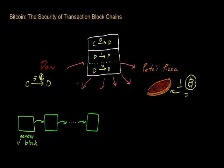There are these special nodes — these special entities or people in Bitcoin that are known as Bitcoin miners. And these Bitcoin miners are going to be responsible for making sure that everything checks out in the transaction from a global perspective.